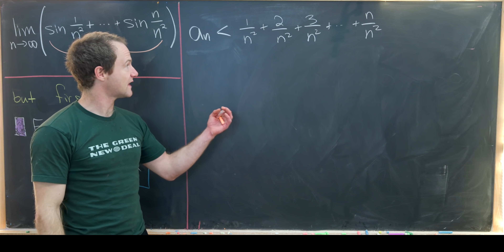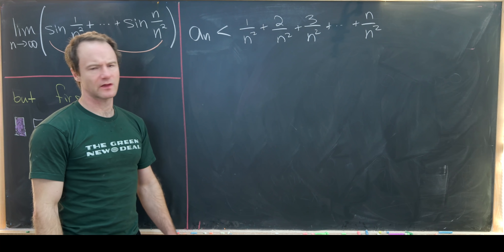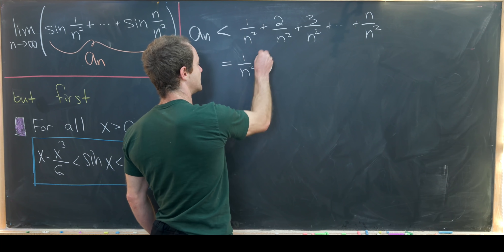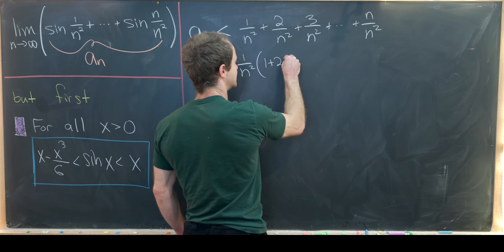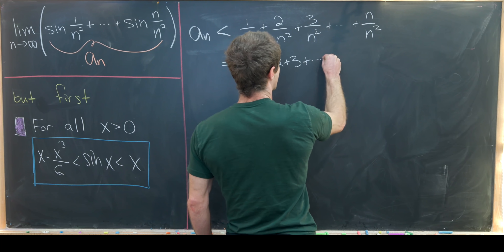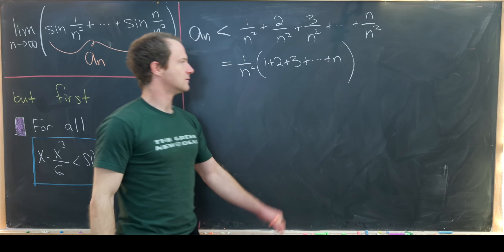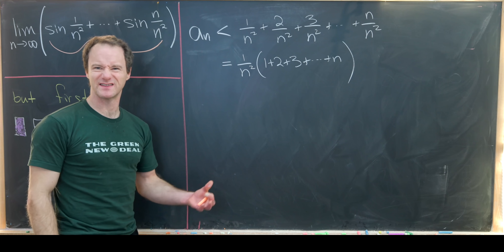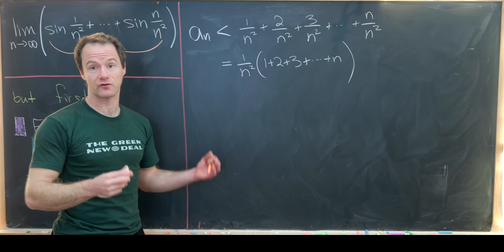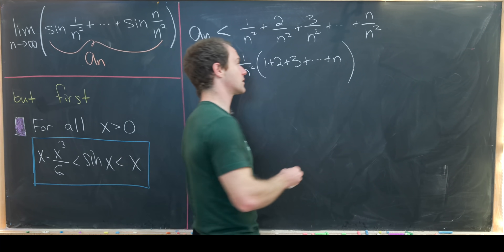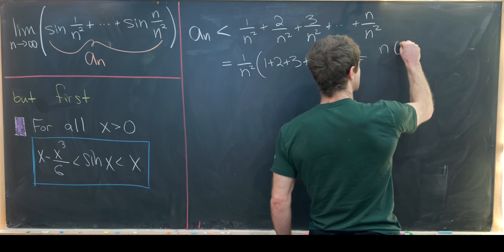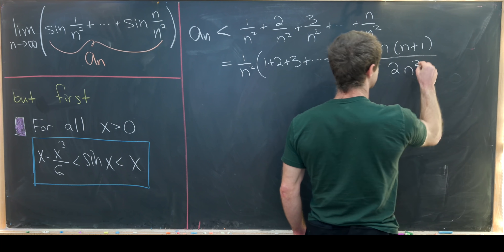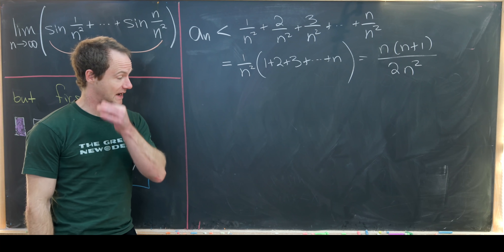We can factor out 1 over n squared and we're left with 1 plus 2 plus 3 all the way up to n — a well-known triangular number. Using the closed-form formula, this gives us n times n plus 1 over 2, times 1 over n squared, which simplifies to n times n plus 1 over 2n squared.